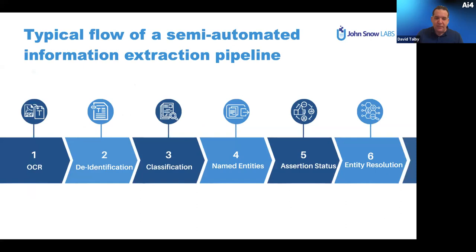A typical information extraction pipeline has multiple steps: extracting text from images if needed, de-identifying, classifying documents — is this a pathology report or lab report? — then extracting entities, assertion statuses, and linking them to terminologies. You build these NLP pipelines and train them. It does get complex, but that's what we need.